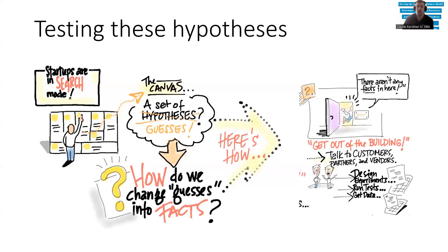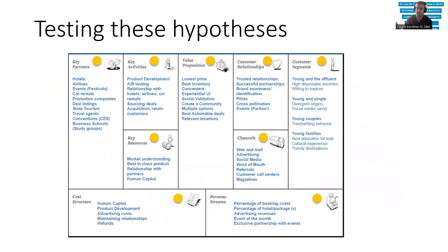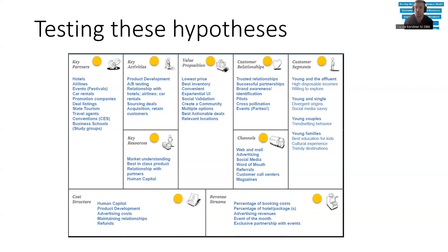We've got to get out of the building — that's the whole concept of developing this business model. Here's an example of a jersey company that manufactures and creates sports jerseys. Think about inventory management as a critical key activity, potentially outsourced. Some of their key partners might be hotels, airlines, events, car rentals, promotion companies, deal listings, state tourism, travel agents, conventions, and business schools — and they're testing these. Some of their key activities would be product development, testing relationships with hotels, airlines, and car rentals, sourcing deals, acquisitions, and retaining customers.